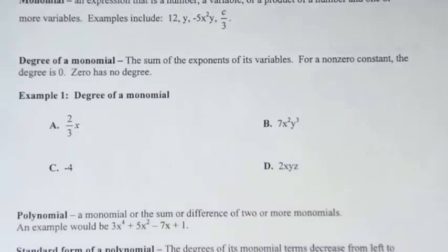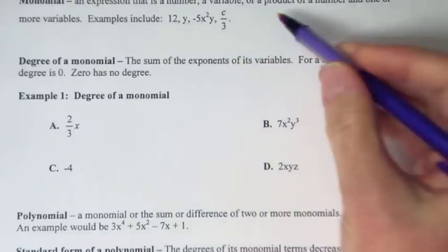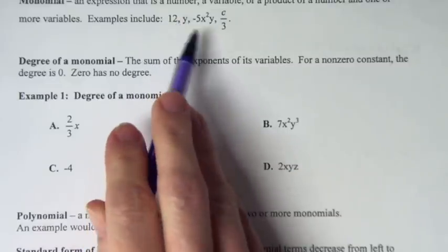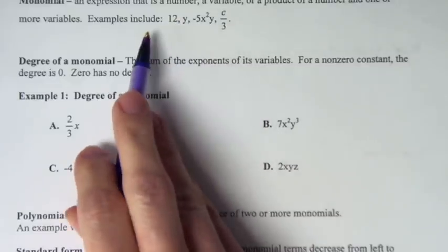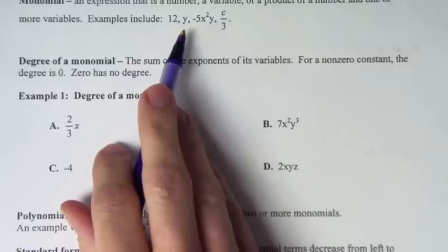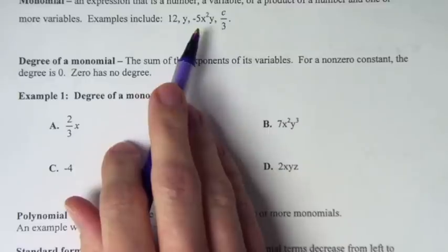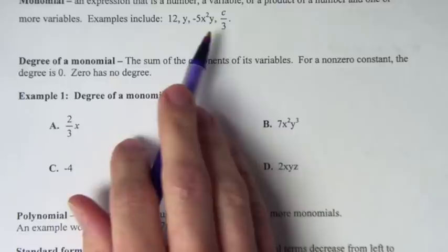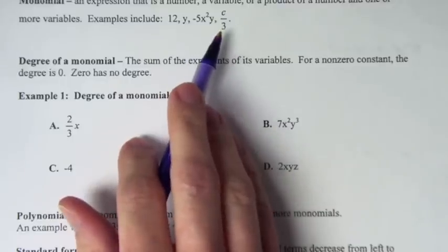We are first going to talk about what a monomial is. A monomial is an expression that is a number, variable, or product of a number and one or more variables. Here are examples of monomials. We have 12 — it's just a number. We have y — it's just a variable. These are all different examples of monomials. Negative 5x squared y, that's a monomial. C over 3, that's a monomial.